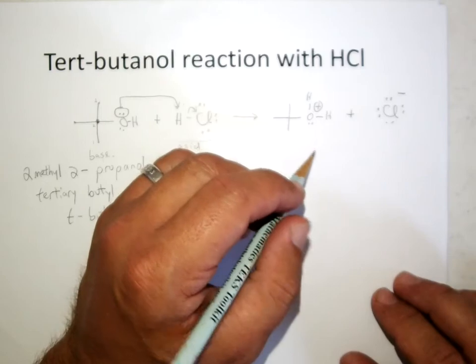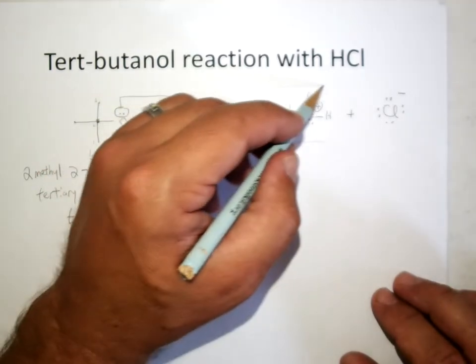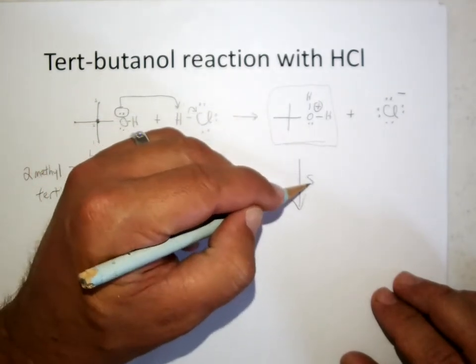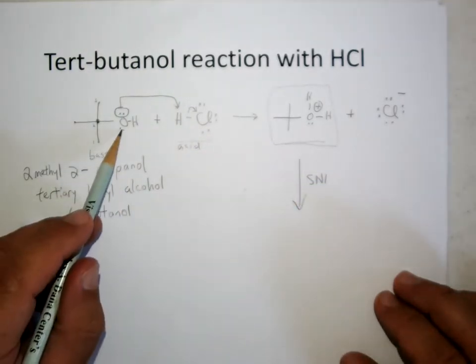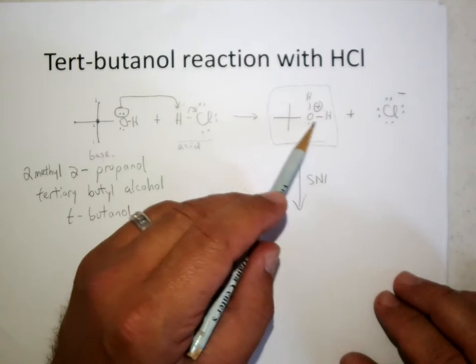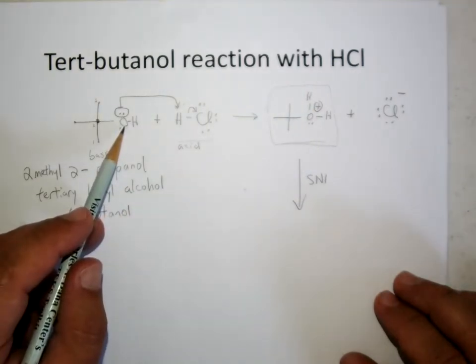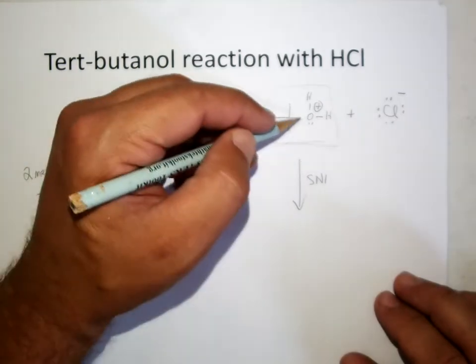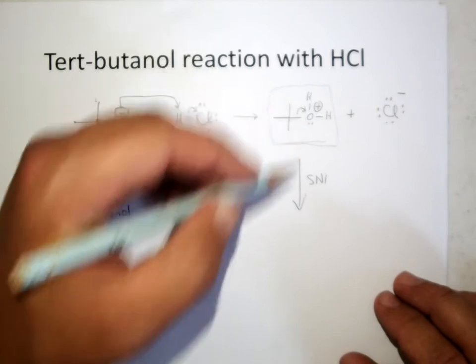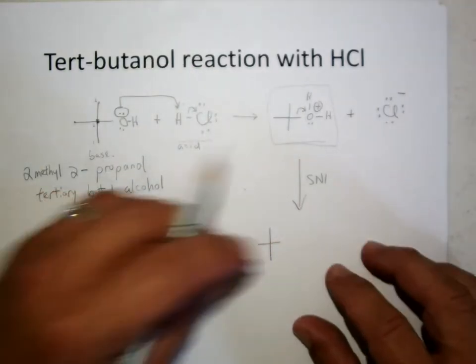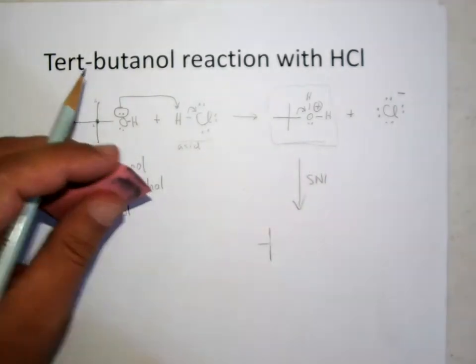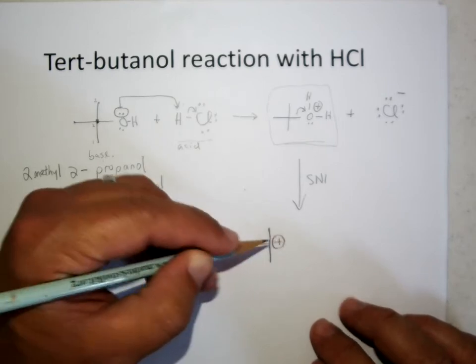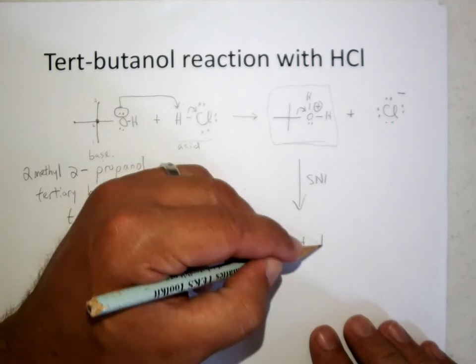And when that'll happen then is now you have a tertiary group with a decent leaving group on it. So from here it'll go by an SN1 reaction. So we protonate the alcohol to create a better leaving group here. The OH- isn't going to leave neutral molecule, but the water is going to leave. And so this pair of electrons will go with the water, and that will make our familiar intermediate that we've seen before of a tertiary carbocation. Tertiary carbocation, and that will produce water product.